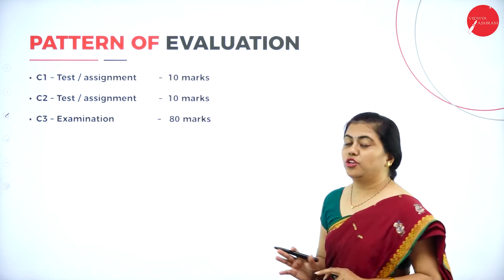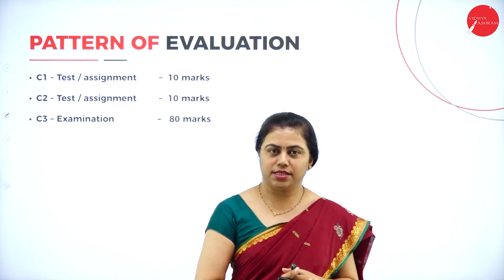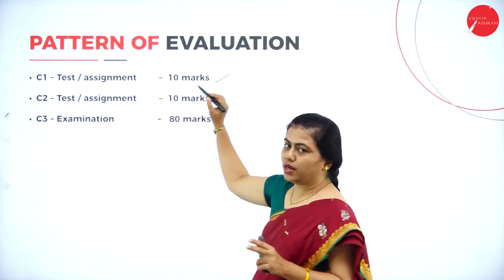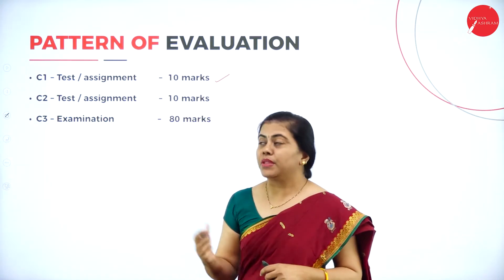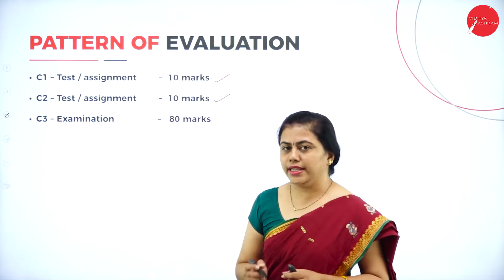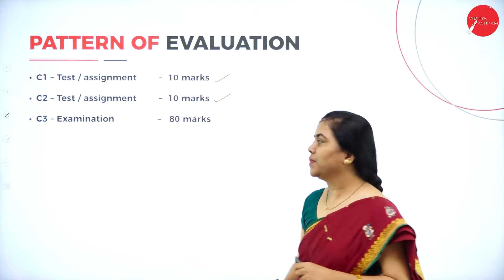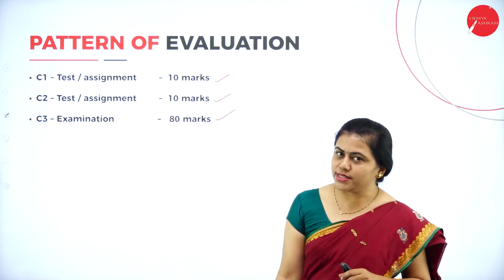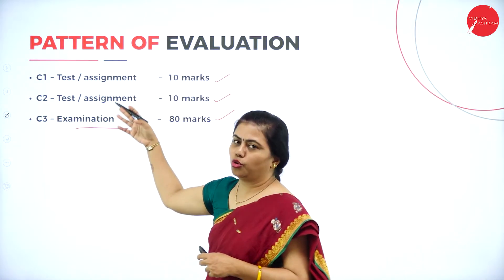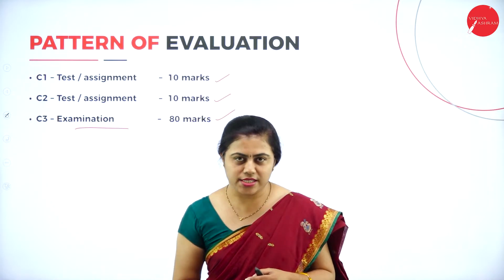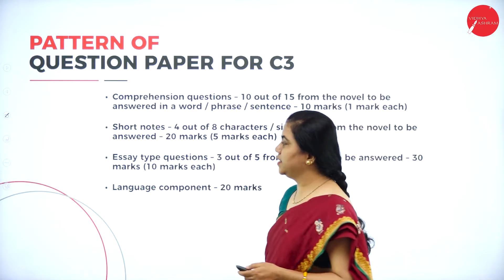Now let us understand the pattern of evaluation. After we learn all these, how are we evaluated? Here C1 — credit one — we have a test or assignment for 10 marks; your teacher will be giving you a few questions. C2 is also given by the teacher. These two are purely internals — they are in the hands of your teacher. At last, this is the question paper that comes from the university, where the question paper pattern is slightly different.